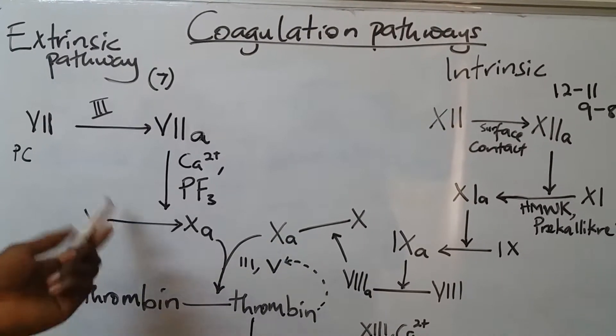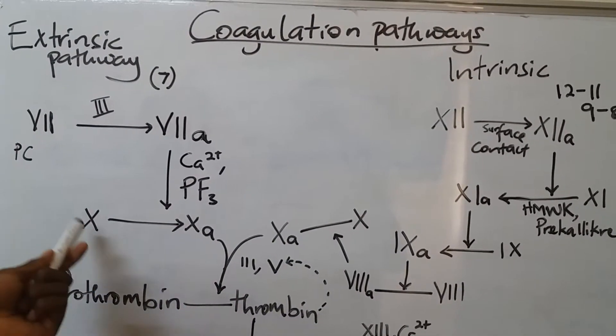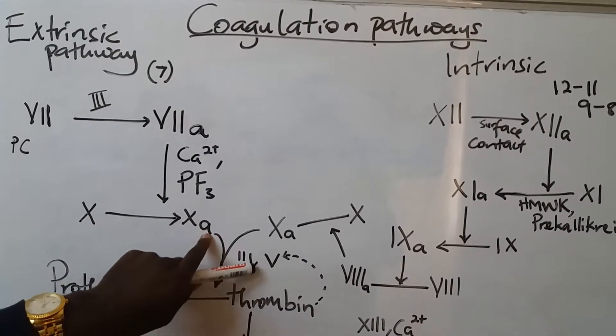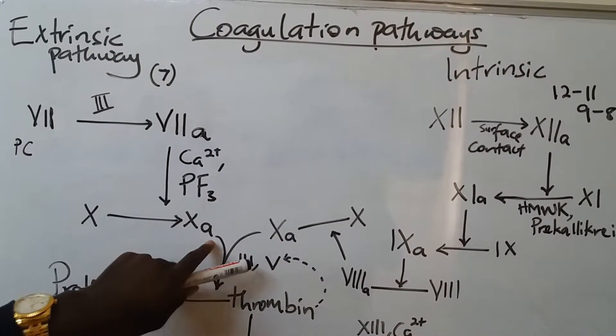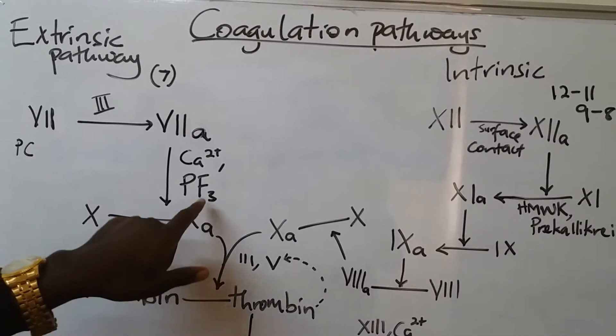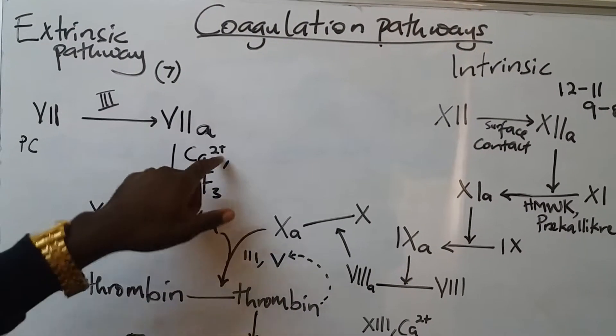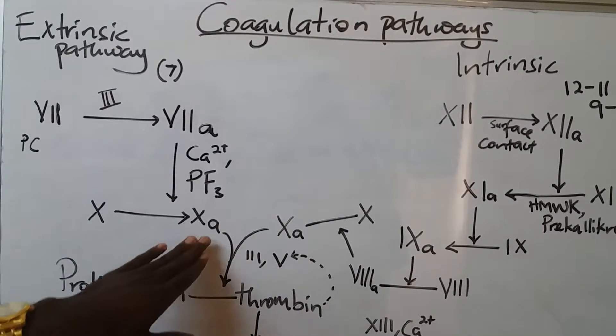After here, we shall have activation of factor 10. Now this A means activated, and wherever you see it, know that the clotting factor is activated. These are platelet phospholipids. These are calcium ions. We shall first leave this and go to the intrinsic pathway.